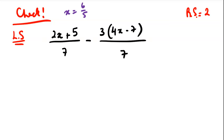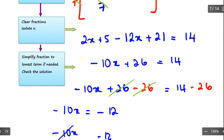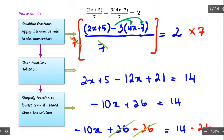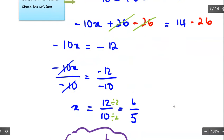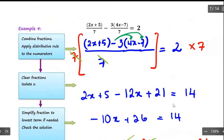Hello everyone. I would like to continue with solving for fractional equations. In the previous lesson we solved for this equation — combining the two numerators because we already had the same denominators, then multiplied by the denominator to get rid of it, distributed the term being careful with the negative sign, ending up with a linear equation. We found x equal to 6 over 5.